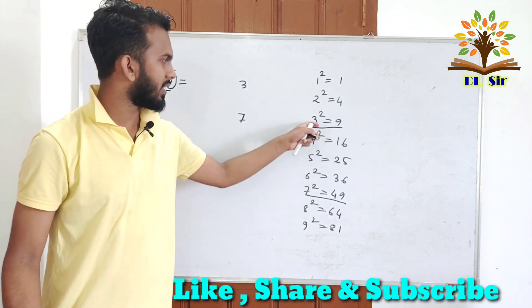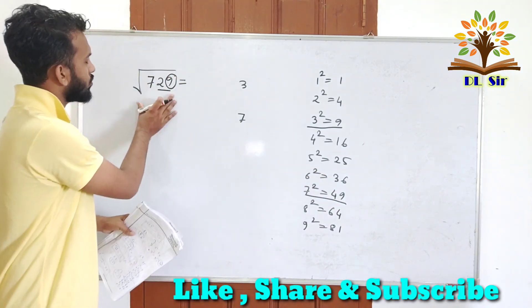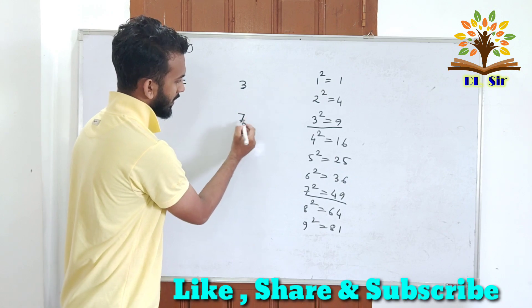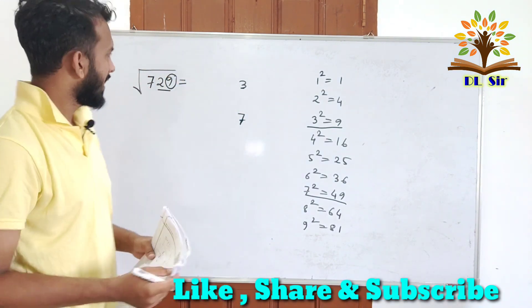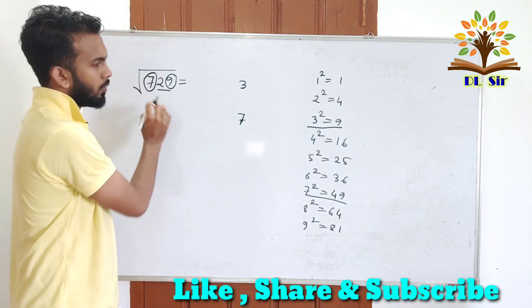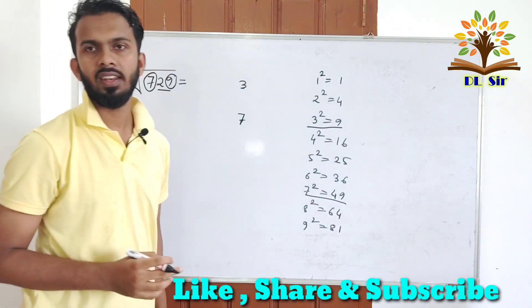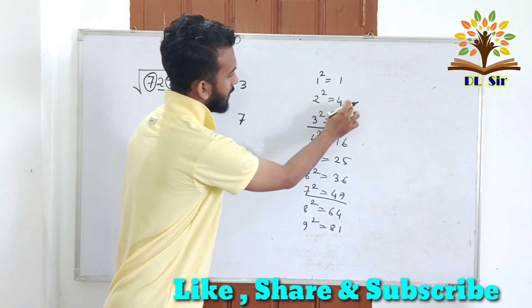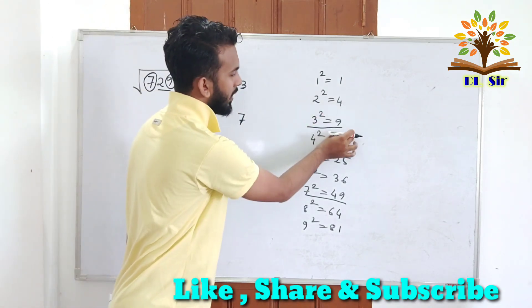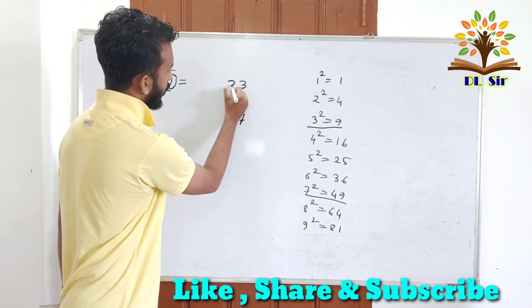Okay so we have 3 square 9 and 7 square 49, so we have unit place 9 that means our number square root this unit place is either 3 or 7. Next we have 7. 7 comes with 2 square, 2 square 4 and 3 square 9. That means 2 and 3 middle, 2 or 3 middle.